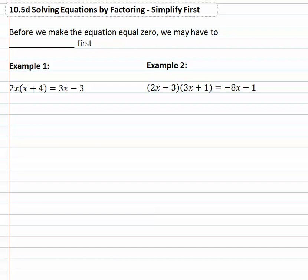However, before we make the equation equal to zero we may have to simplify first. In other words, if we had a problem like 2x times x plus 4 equals 3x times x minus 3.